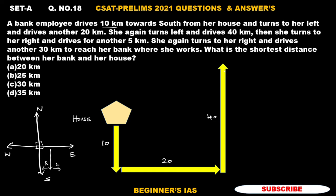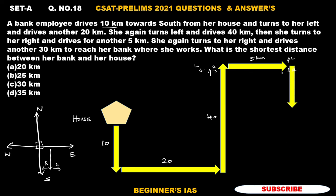If she is walking in this direction, this is her left and this is her right — be sure about this. So she turns right and walks 5 kilometers in this direction. Then this is her left and this is her right. It is given that she is making a turn to her right and drives another 30 kilometers.